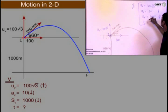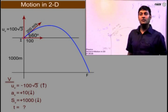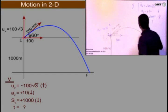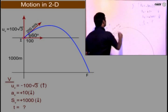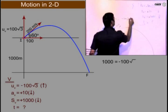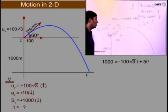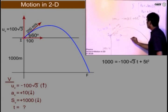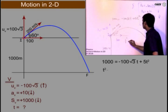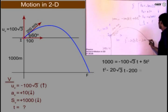Which direction positive? I have taken downward positive. So 1000 is equal to ut plus half at square, minus 100 root 3 t plus half at square. Now 5 can be cancelled. So I will get t square minus 20 root 3 t minus 200 equal to 0.